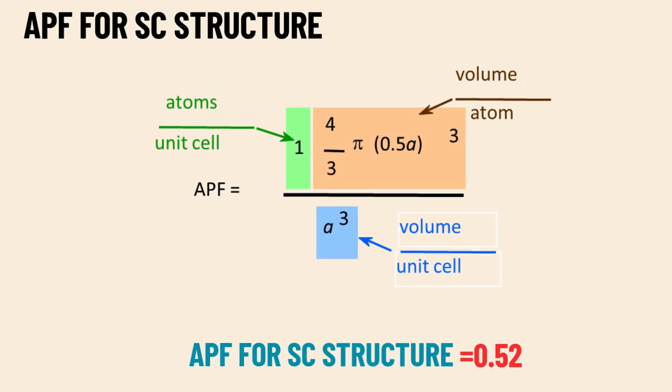The APF for a simple cubic structure is 0.52, or 52%, meaning only 52% of the volume in the unit cell is occupied by atoms, and the remaining 48% is empty space. This low packing efficiency makes the SC structure less stable and rare in nature. Only a few elements, like polonium, crystallize in this form.